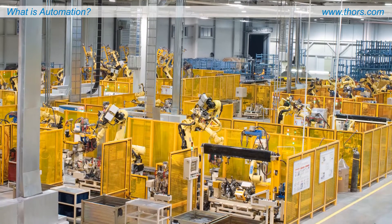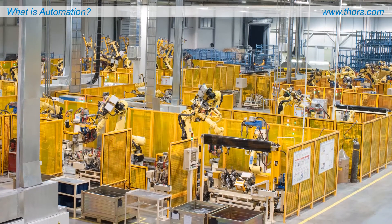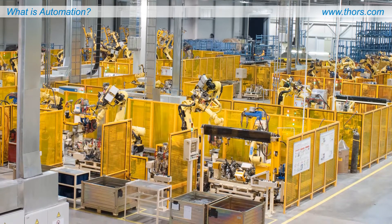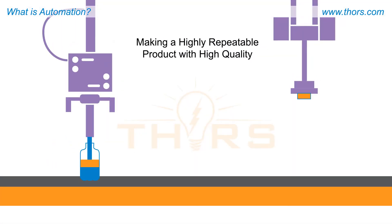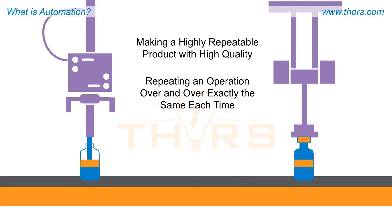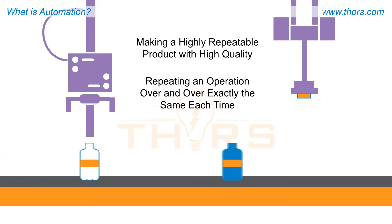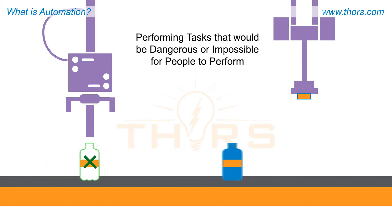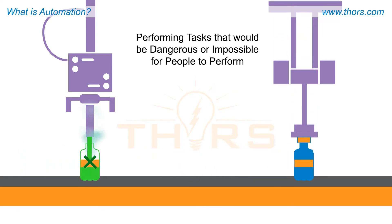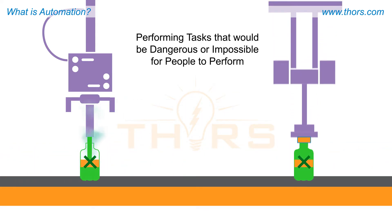Manufacturers add automation in order to gain a number of important benefits, including making a highly repeatable product with high quality, repeating an operation over and over exactly the same each time, and performing tasks that would be dangerous or impossible for people to perform.